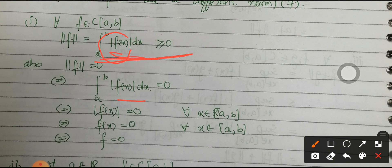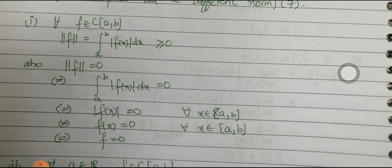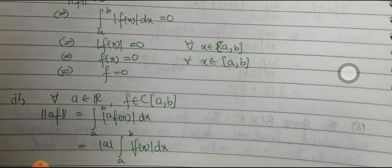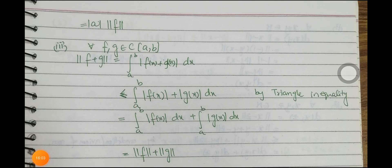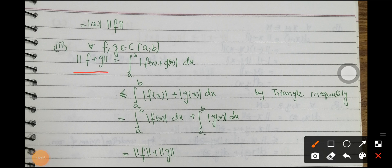For condition 1b: if ‖f‖ = 0, then ∫ₐᵇ |f(x)| dx = 0. The integral is zero only if the integrand is zero, so |f(x)| = 0 meaning f(x) = 0 for all x ∈ [a,b], hence f is the zero function. For condition 2: ‖af‖ = ∫ₐᵇ |af(x)| dx = |a| · ∫ₐᵇ |f(x)| dx = |a| · ‖f‖, so condition 2 is satisfied.